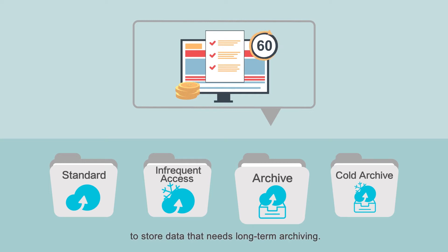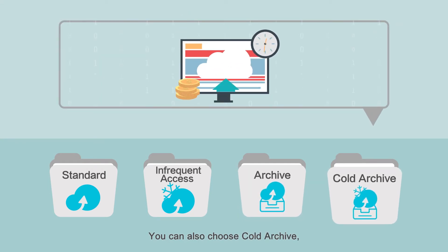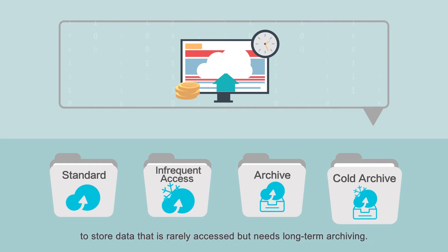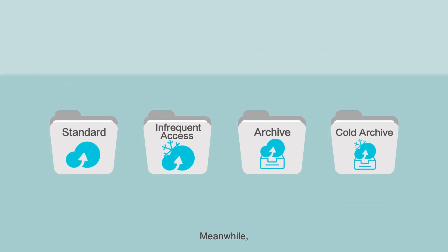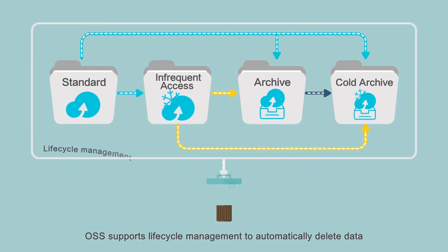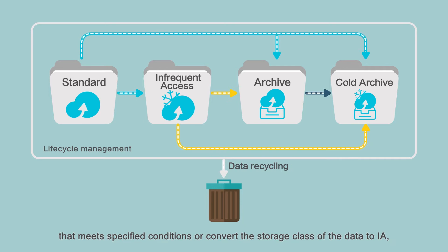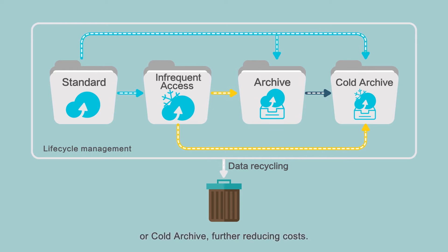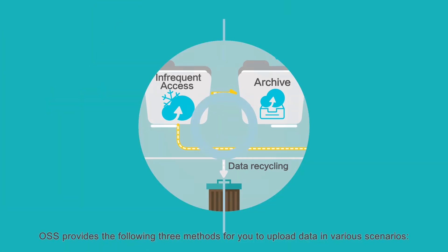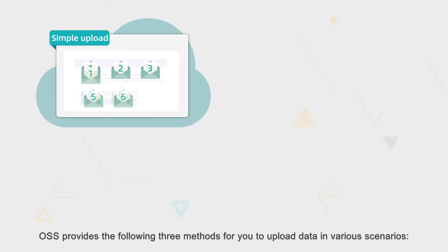You can also choose Archive, which is more cost effective than IA, to store data that needs long-term archiving. You can read archive data within a minute. You can also choose Cold Archive, which is the most cost effective option, to store data that is rarely accessed but needs long-term archiving. OSS supports lifecycle management to automatically delete data that meets specified conditions or convert the storage class of the data to IA, Archive, or Cold Archive, further reducing costs.